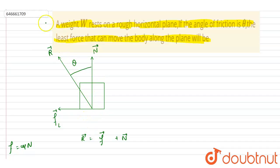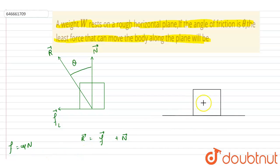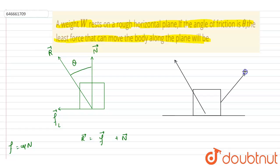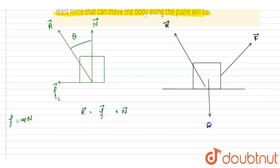The weight W is given and we want the minimum force that should be applied so that the block moves. If the block is moving, the net reaction force by the ground will be acting at an angle theta with the vertical. Let us say the applied force F acts at angle phi, and weight W acts downward. So this is R vector, this is F vector, and this is W vector.